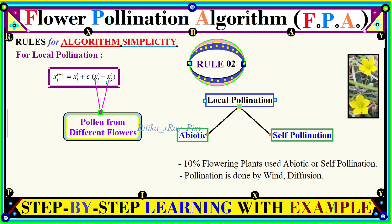Rule 2 is for local pollination. For local pollination we use self-pollination or abiotic pollination. About 10% of flowering plants use abiotic or self-pollination, often done by wind. We can perform local pollination using the equation: x_i^(t+1) = x_i^t + ε(x_j^t − x_k^t), where ε is drawn from a uniform distribution. This new solution will not be far away from the existing one.